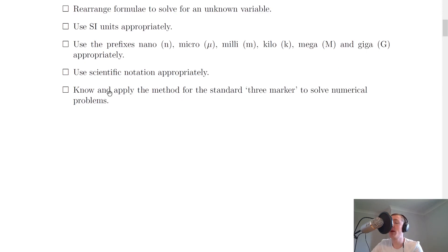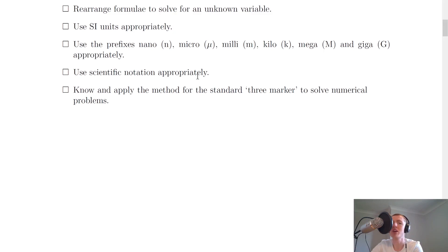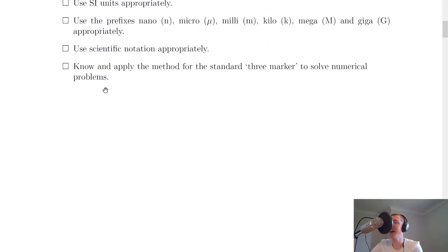You should be able to use scientific notation appropriately. If your calculator outputs a large number with lots of zeros, you need to be able to put that into scientific notation to write it as your final answer. Remember, one or two decimal places is sufficient.